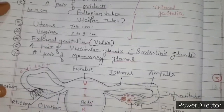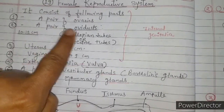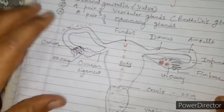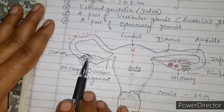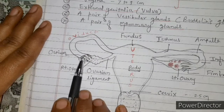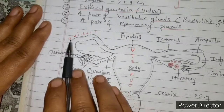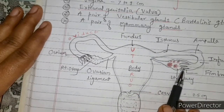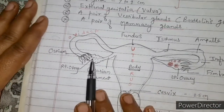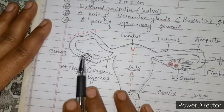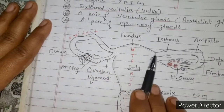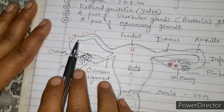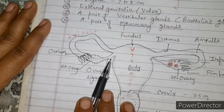The next part is a pair of oviducts, also called fallopian tubes or uterine tubes. Each oviduct measures about 10 to 12 centimetres in length and is divided into three parts.